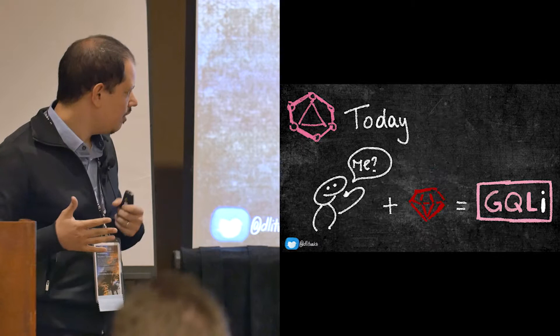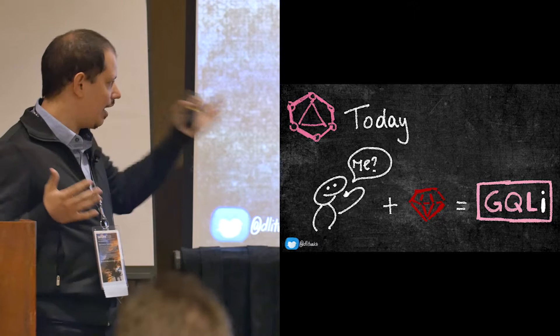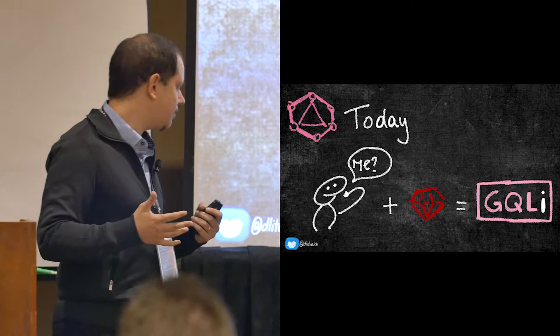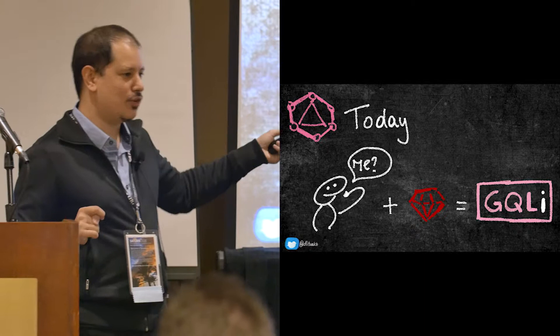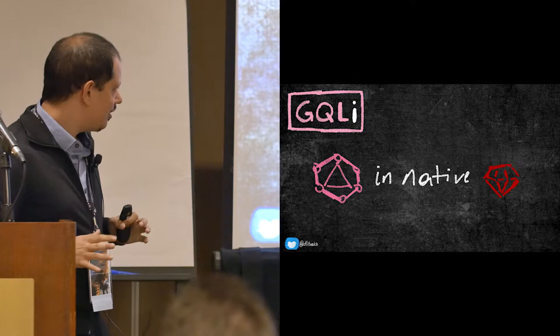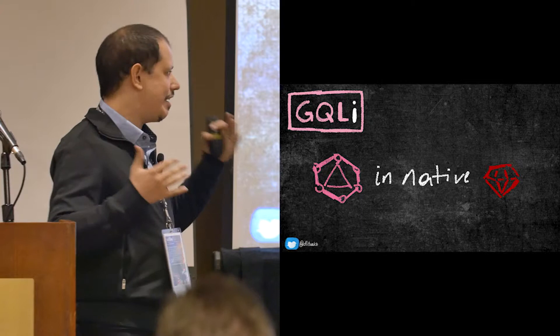So this is what happened. Today, I released a gem called GQLI, which actually allows us to do this. And I'm going to tell you a little bit about it. By the way, last Friday, I released the 1.0 version of this gem. So I'm super excited about that in particular. So what does GQLI do? It allows us to write GraphQL queries in native Ruby.